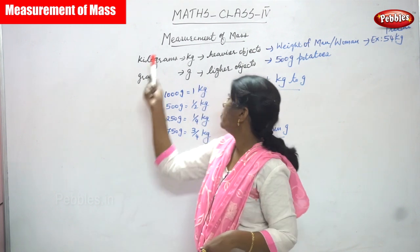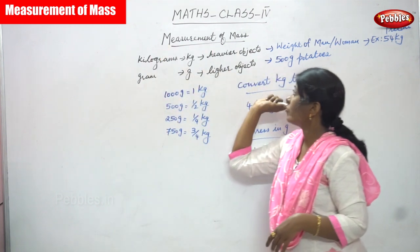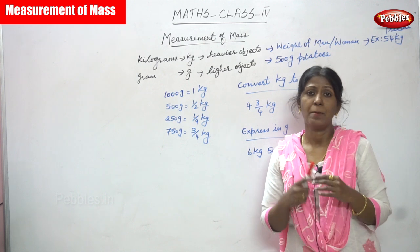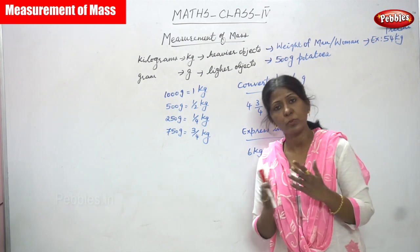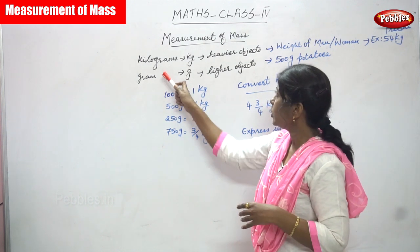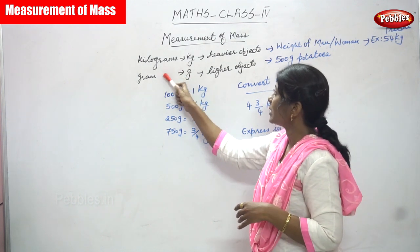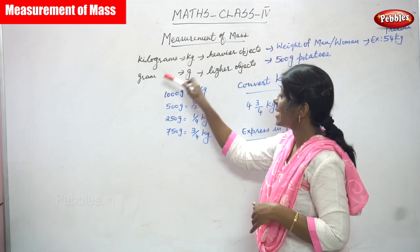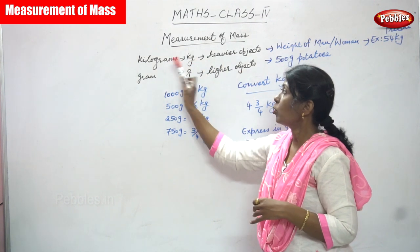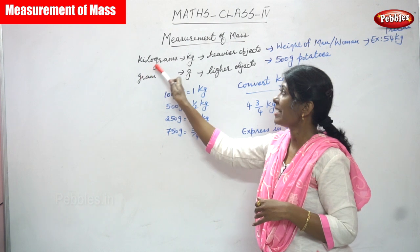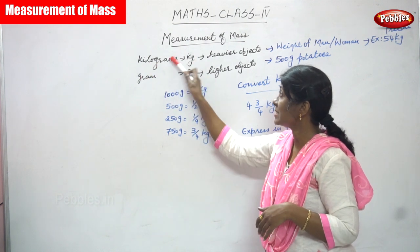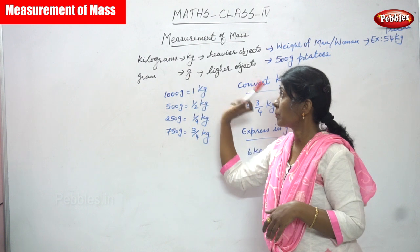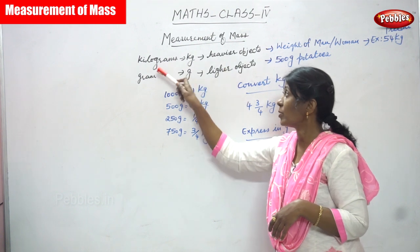Now we are going to see measurements of mass. Mass is also called weight — mass and weight are almost similar. Kilogram means kg and gram means g. Kilogram is spelled k-i-l-o-g-r-a-m, denoted by kg, and gram is denoted by g.